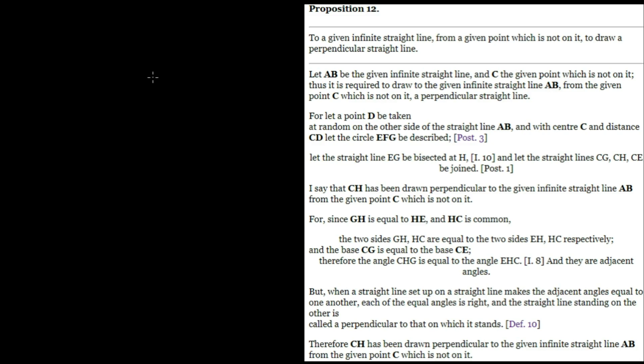In Proposition 12, we're going to do something similar to the previous proposition. Instead, what we're going to do is build a perpendicular straight line from an infinite straight line and a given point, as opposed to a point on the straight line. To a given infinite straight line from a given point which is not on it, draw a perpendicular straight line.